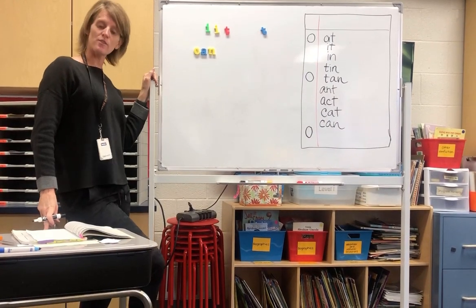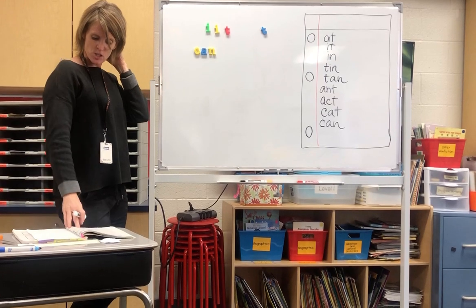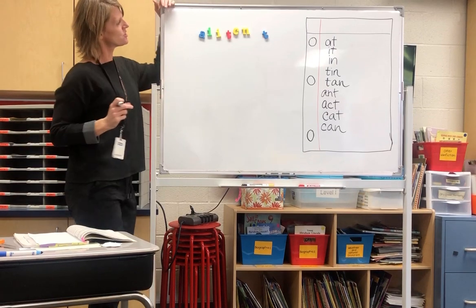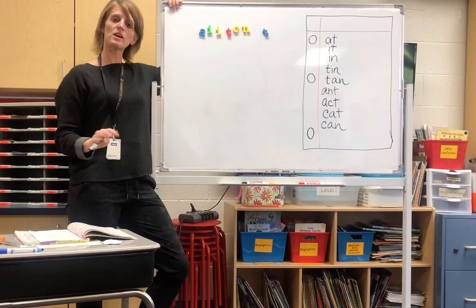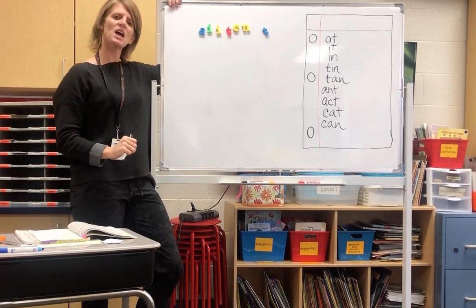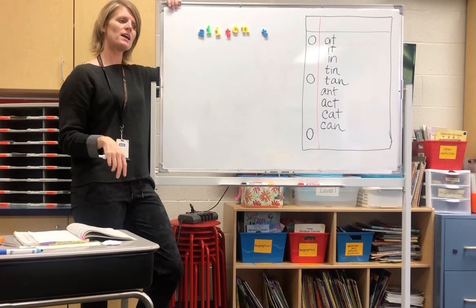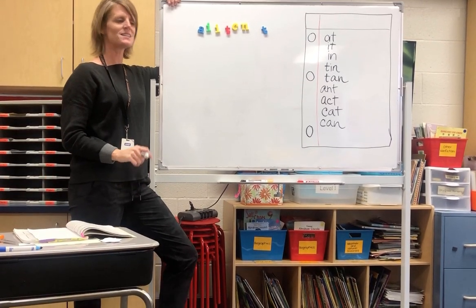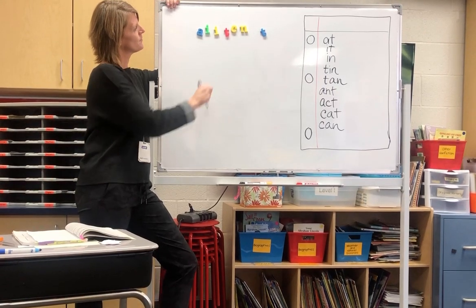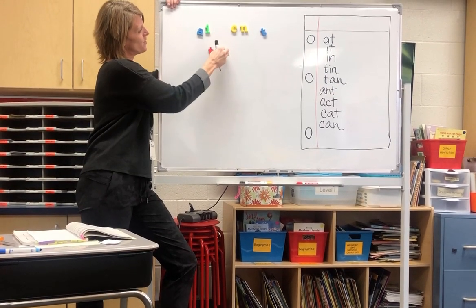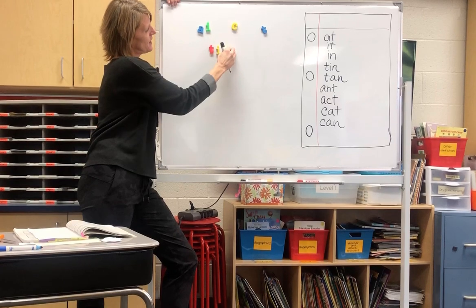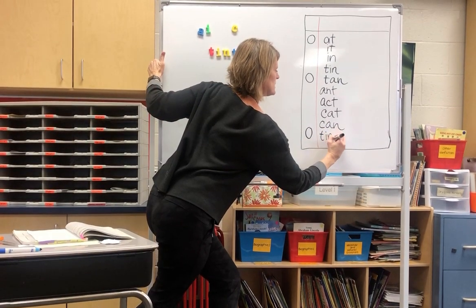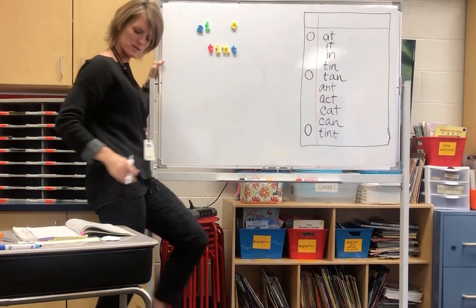Now let's move on to some four-letter words. Let's put all of our letters back. The first four-letter word I want you to spell is the word tint — like 'I put a tint of gray into the white paint and now it's pink.' Tint. Hopefully your four letters were T, I, N, T. Go ahead and add the word tint to your list of words on the side.